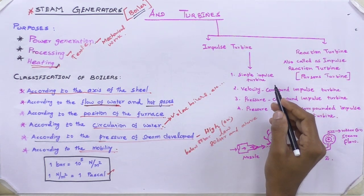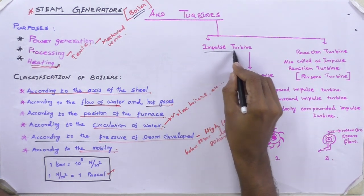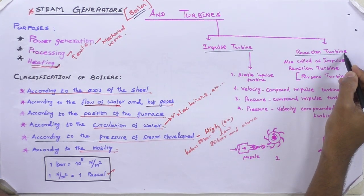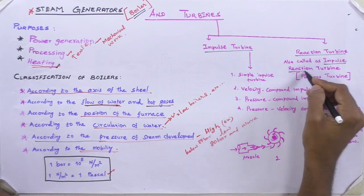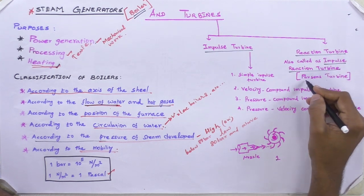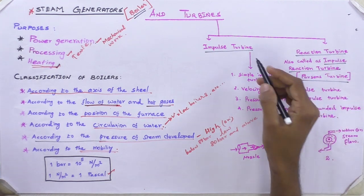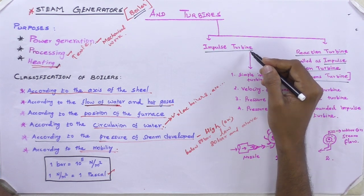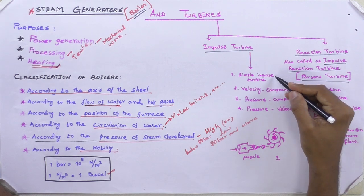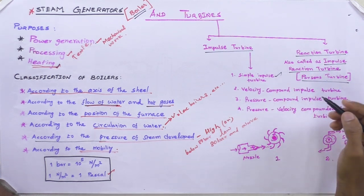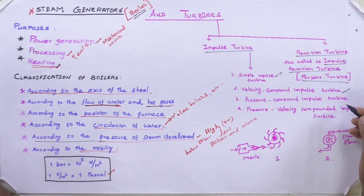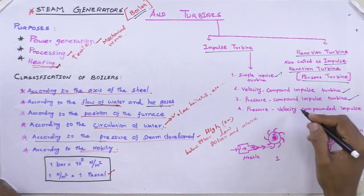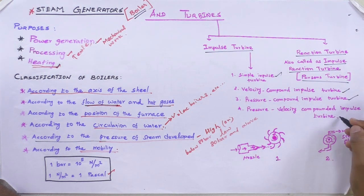Turbines may be classified mainly into two types: one is impulse turbine and another is reaction turbine. The reaction turbine is also called an impulse-reaction turbine or Parsons turbine. The impulse turbine is further classified into four types: simple impulse turbine, velocity compounded impulse turbine, pressure compounded impulse turbine, and pressure-velocity compounded impulse turbine.